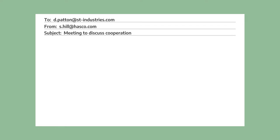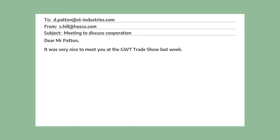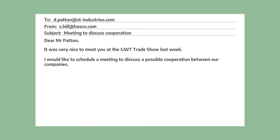So she starts off with a formal greeting: "Dear Mr. Patton." So "Dear" is the most common way to start a formal email. Then she writes, "It was very nice to meet you at the WGT trade show last week." It can be important to remind the person about the last contact you had — it's quite possible that Mr. Patton had many conversations with many different people at the trade show. Then Susan writes, "I would like to schedule a meeting to discuss a possible cooperation between our companies." So this is the meeting request.